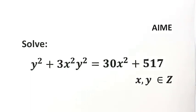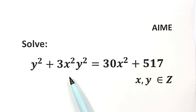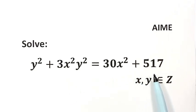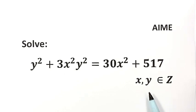In this video, we can solve this equation y squared plus 3x squared y squared equals 30x squared plus 517. Here x and y are integers. This question is from ARME.